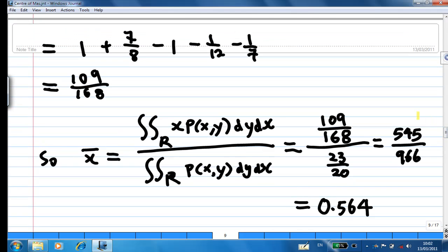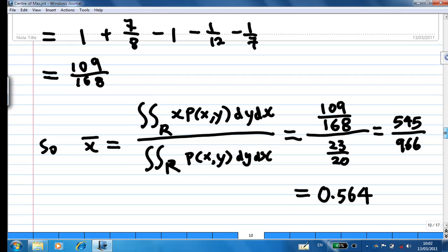You will find that this is equal to 109 over 168. So the x coordinate of the center of mass, which is x̄ here, is equal to this ratio, and the numerical value of x̄ computed is 0.564.